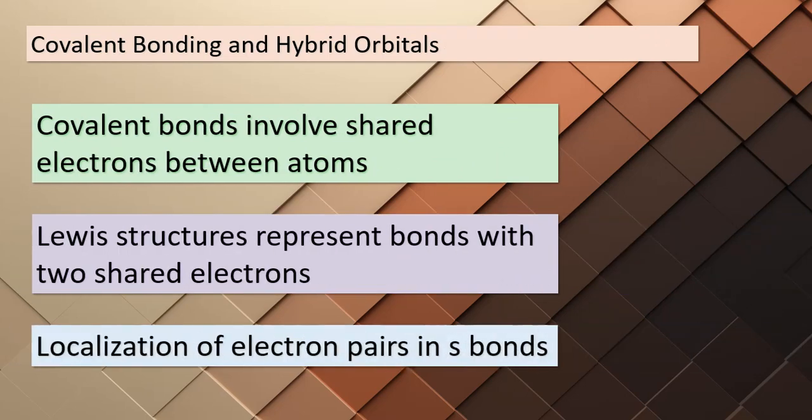Today let's delve into the realm of covalent bonding and hybrid orbitals. When atoms form bonds, they share electrons. Each bond line we draw in Lewis structures represents a pair of shared electrons, crucial for holding molecules together. In single bonds, like sigma bonds, a pair of electrons is localized in the space between the atoms. The hybrid orbitals used to form these sigma bonds depend on the molecule's observed geometry — the shape of the molecule guides which hybrid orbitals come into play. Refer to table 9.4 for more insight into this relationship.